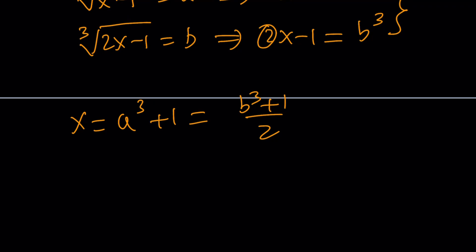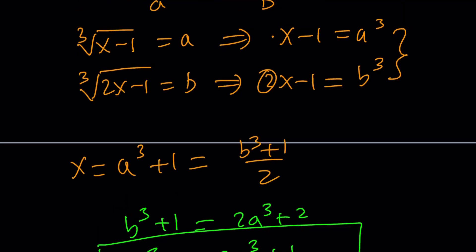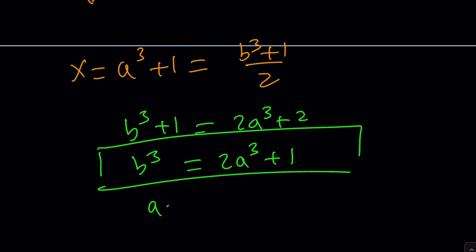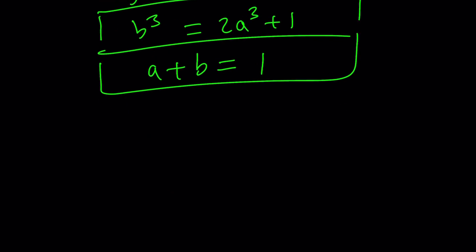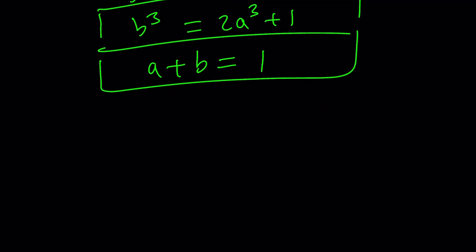So we can go ahead and write this. B cubed plus 1, cross multiply, 2A cubed plus 2, or B cubed equals 2A cubed plus 1. Awesome. So I got this equation, and another one, A plus B equals 1. So what do we do with this? Solve it. Replace B with something, maybe 1 minus A here, and you're going to get 1 minus A cubed equals 2A cubed plus 1.